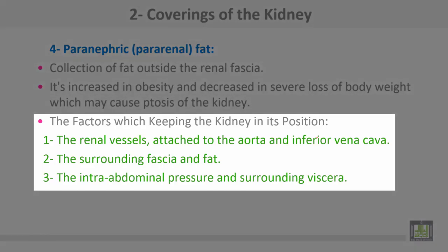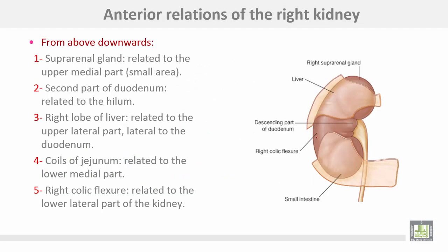The factors which keep the kidney in its position: number one, the renal vessels attached to the aorta and inferior vena cava; number two, the surrounding fascia and fat; number three, intra-abdominal pressure and surrounding organs.